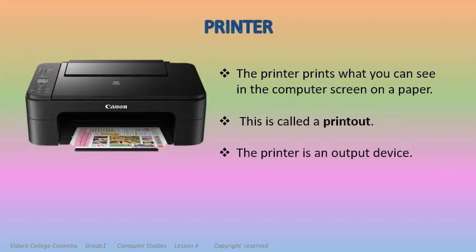The printer can print what you can see on the computer screen onto paper. This is called a printout. The printer is an output device.